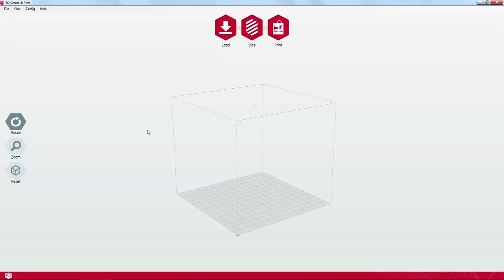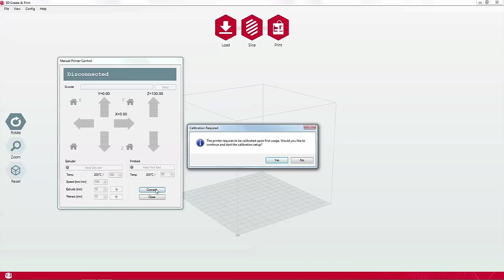From time to time, you may need to test the connection to the printer. Go to the config menu, select manual printer control and click connect. You will now be prompted to calibrate your printer before attempting to print for the first time.